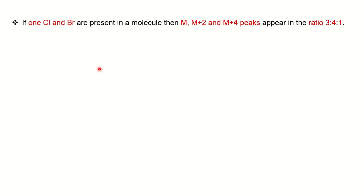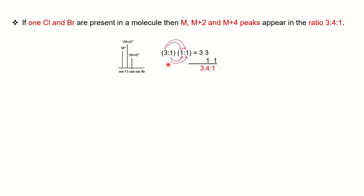The last example: if you have a combination of one chlorine and one bromine in your unknown molecule, you will have M+2 and M+4 peaks in a ratio of 3:4:1. To find this pattern, write down 3:1 for one chlorine and 1:1 for one bromine side by side, then multiply: 3×(1:1) and 1×(1:1), write them shifted and add up. You will get the ratio 3:4:1, identifying the pattern for a molecule having multiple halogen atoms.